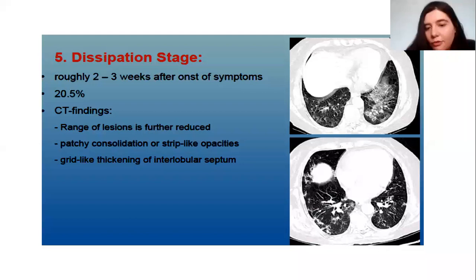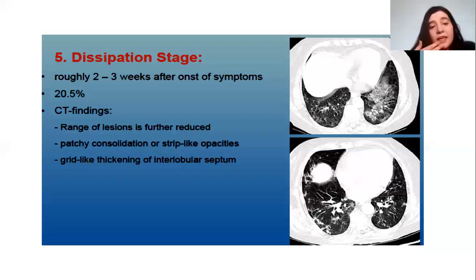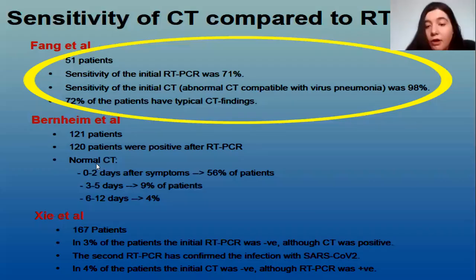Now we are going to talk about sensitivity compared to PCR. We have many studies comparing these two entities. In Fang et al., the sensitivity of PCR was 71%, while the sensitivity of the initial CT scan was 98%, and 72% had typical CT findings. In Bernheim et al., only 4% of patients at day 6 to 12 had a normal CT scan. In Zai et al., 3% of patients with initially negative PCR had positive findings on CT. So the diagnosis can be made from CT even if PCR is negative.